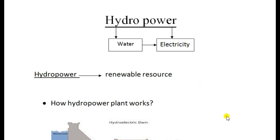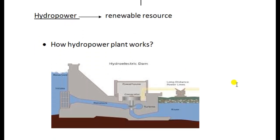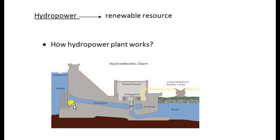Next, we will talk about how hydropower plants work. First, there is a dam where we store the water. We then open a small gate, and after the gate, water flows through a small channel.